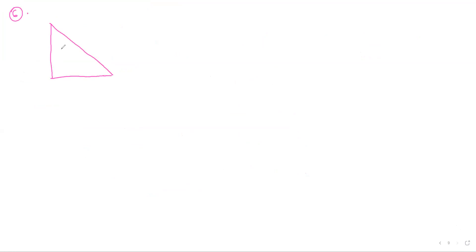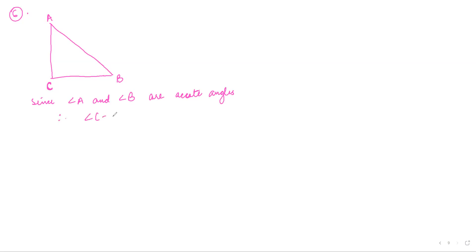Question 6: if angle A and angle B are acute angles such that cos A equals cos B, then show that angle A equals angle B. First, make a right-angle triangle. Angle A and B are acute angles, so you have to take A and B at the two acute corners — meaning angle C will be the right angle. Since angle A and angle B are acute angles, therefore angle C equals 90 degrees.